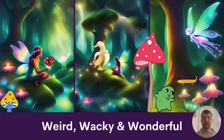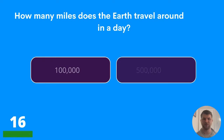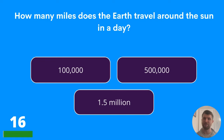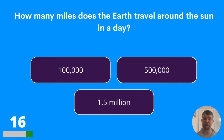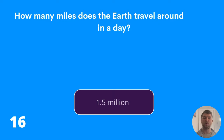We're now moving on to the Weird, Wacky and Wonderful. Question sixteen: how many miles does the earth travel around the sun in a day? One hundred thousand, five hundred thousand, or one point five million? The answer is one point five million.